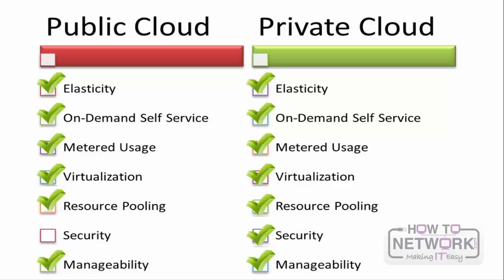These are the differences between public cloud and private cloud. Both the public and private clouds have elasticity. On-demand self-service storage is available in both. Metered usage and virtualization are also available in both the public and private clouds. Resource pooling is also available in both clouds. The main difference between public and private clouds is security: the public cloud has minimal security, whereas the private cloud has high security.